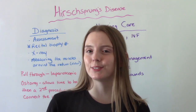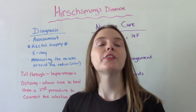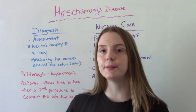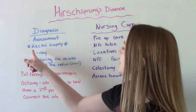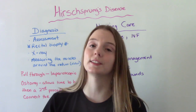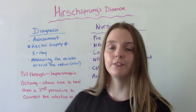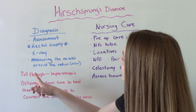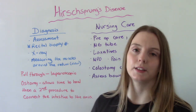So how is this diagnosed? First, they're going to do an assessment — a proper head-to-toe assessment of the newborn. They'll notice the absence of that first meconium, and the child may have some abdominal distension and poor feeding. The number one diagnostic procedure after that is a rectal biopsy, which is the gold standard. They may also do an abdominal x-ray for visualization. In the older child, they might do measurements of the muscles around the rectum as well.